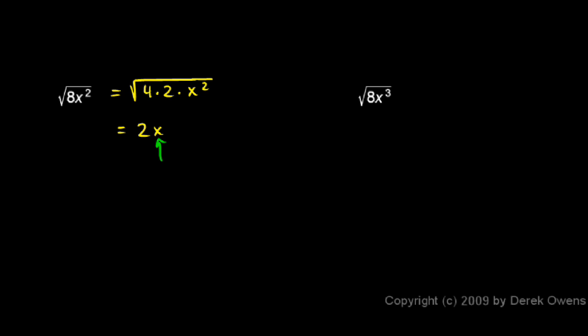And this x is the square root of x squared right there. What's not accounted for yet is the 2, and it's still under the radical. So I have 2 times x times the square root of 2.